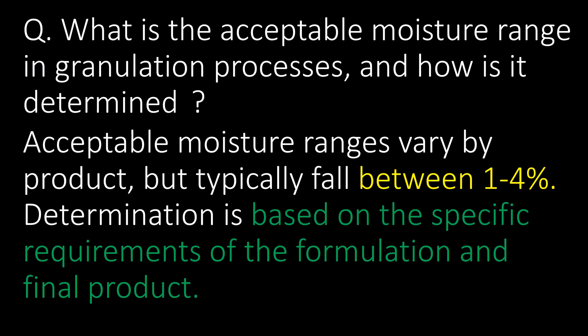What is the acceptable moisture range in granulation processes and how is it determined? Acceptable moisture ranges vary by product but typically fall between 1 to 4 percent. The determination is based on the specific requirements of the formulation and the final product.